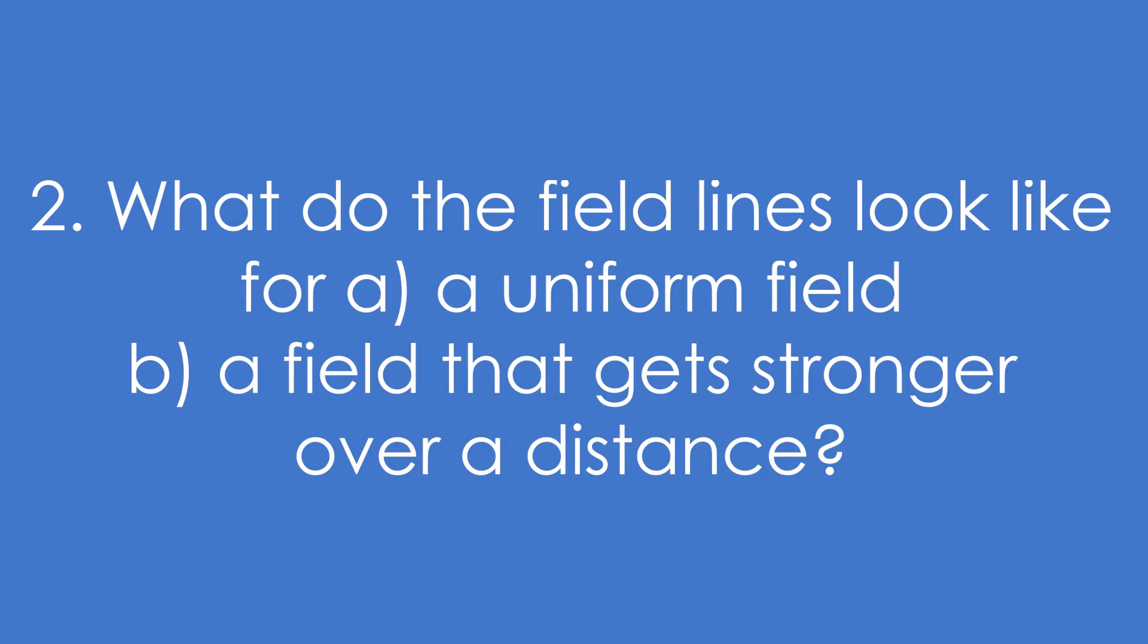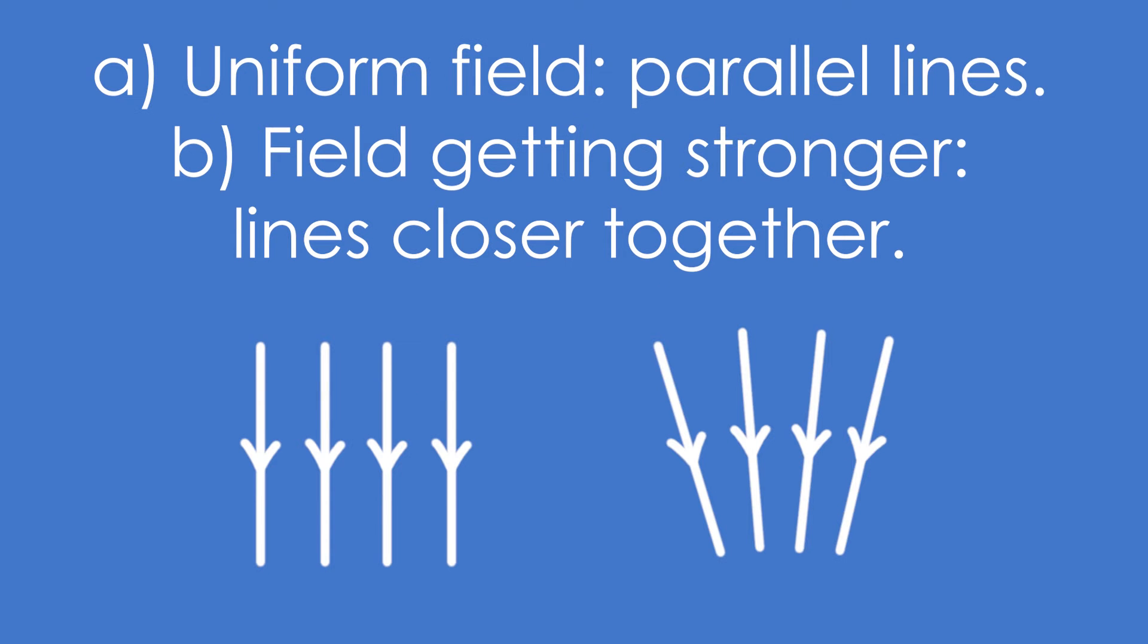Two, what do field lines look like for a uniform field and for a field that is getting stronger? For a uniform field, we have parallel lines, and for a field that's getting stronger, the lines are closer together. The more densely packed the field lines are, the stronger the field at that point.